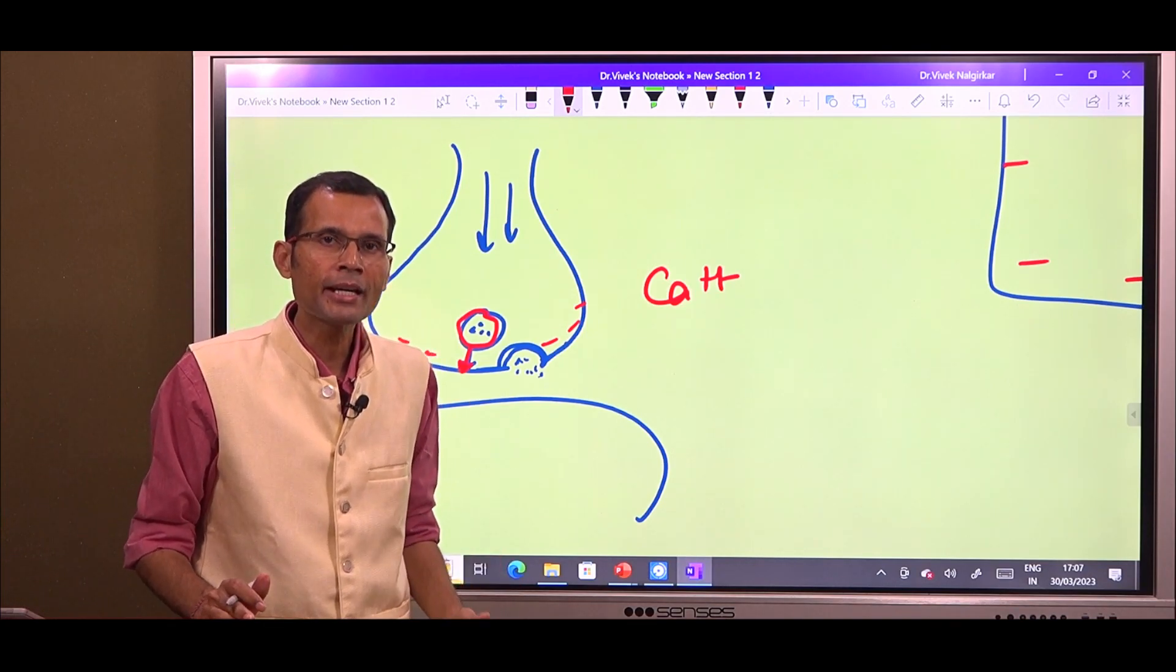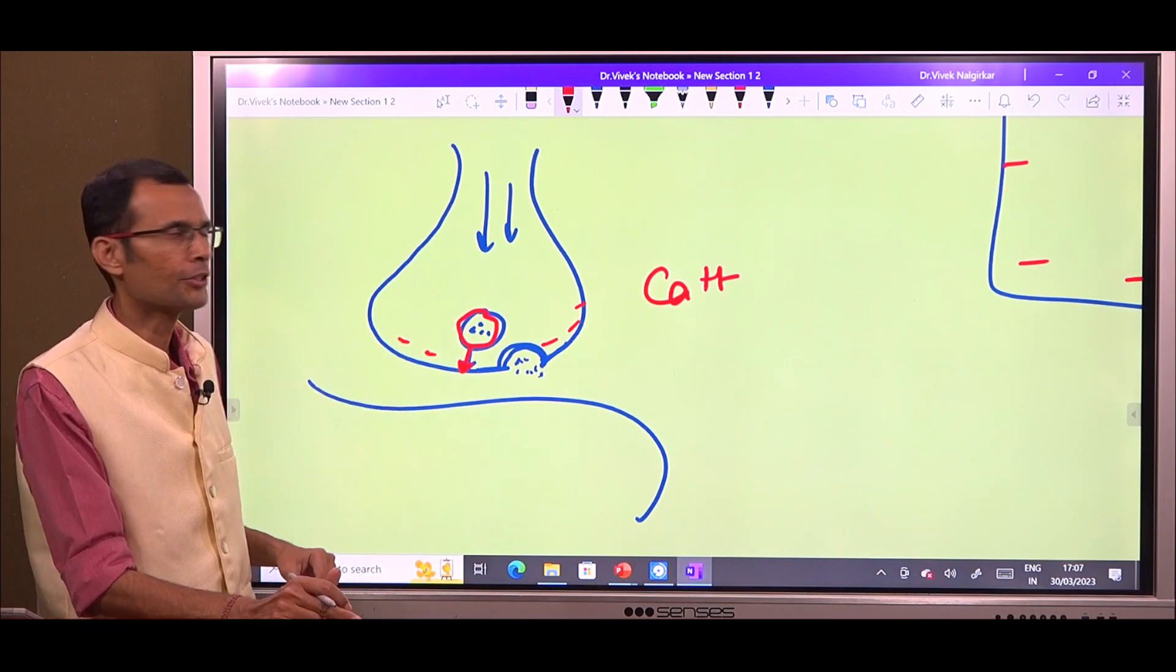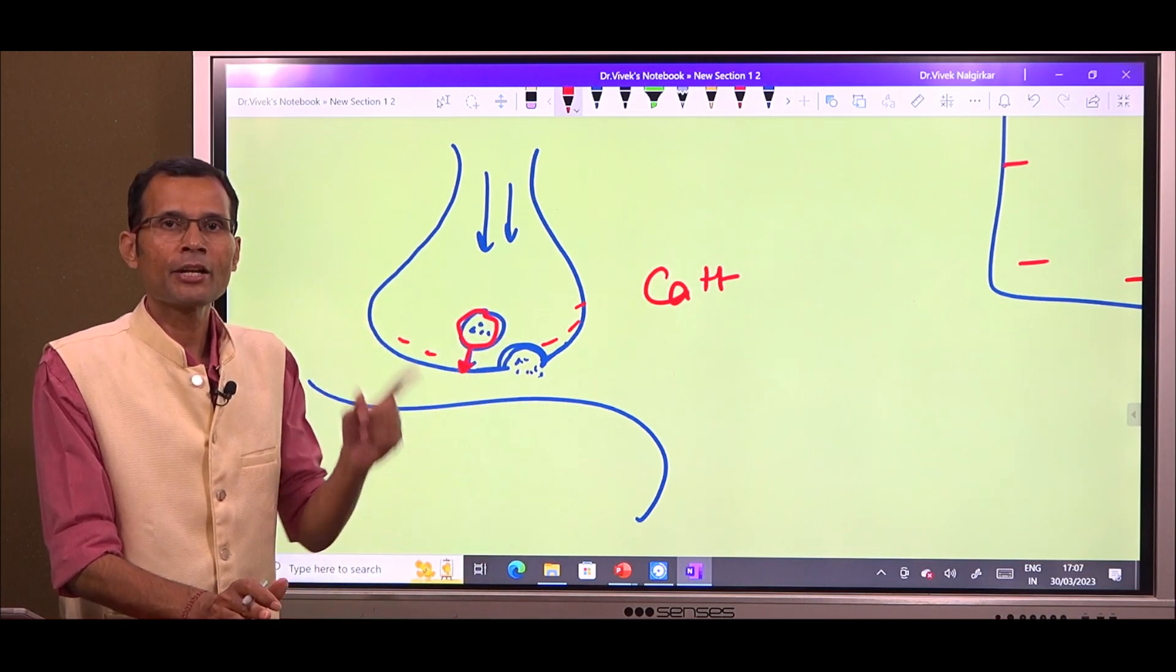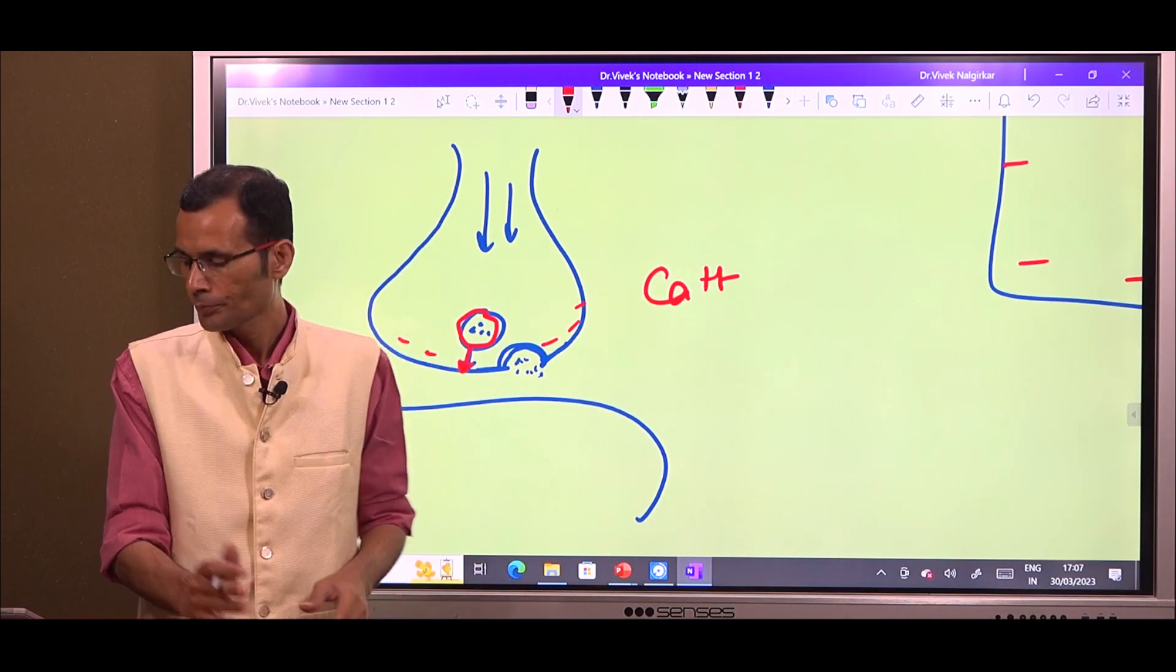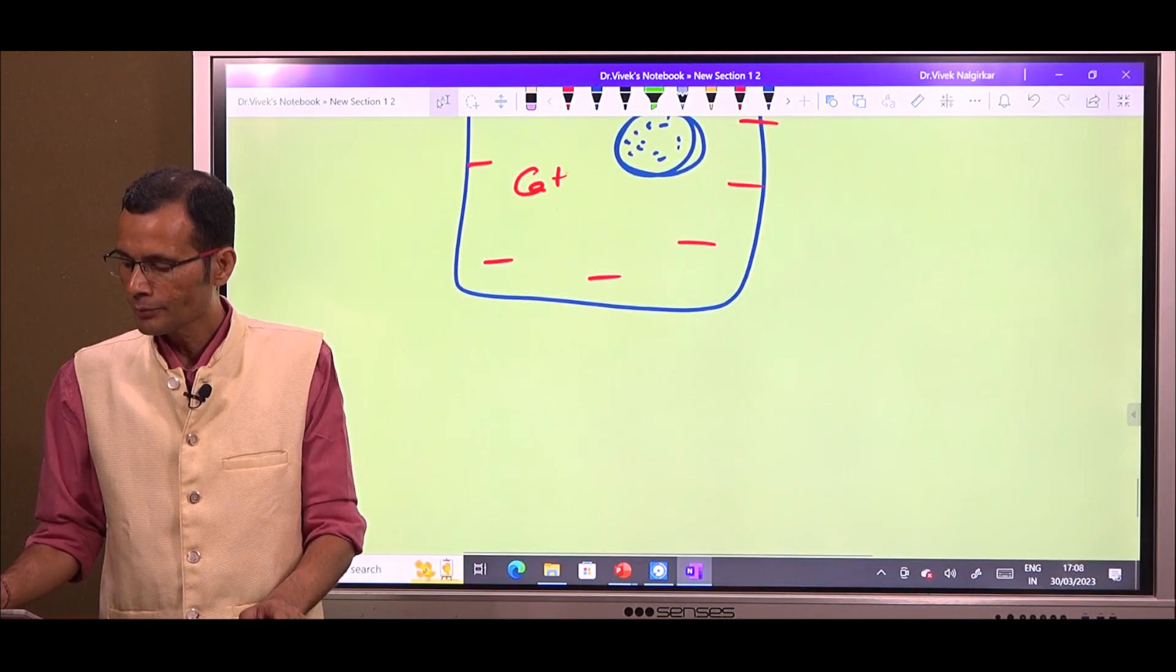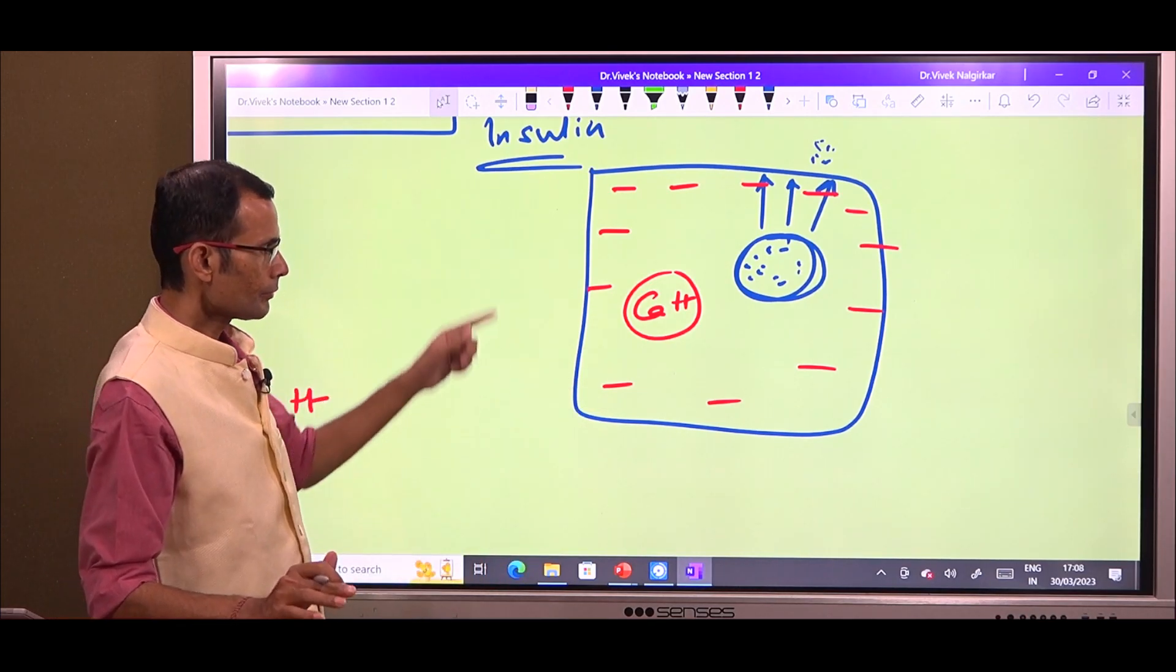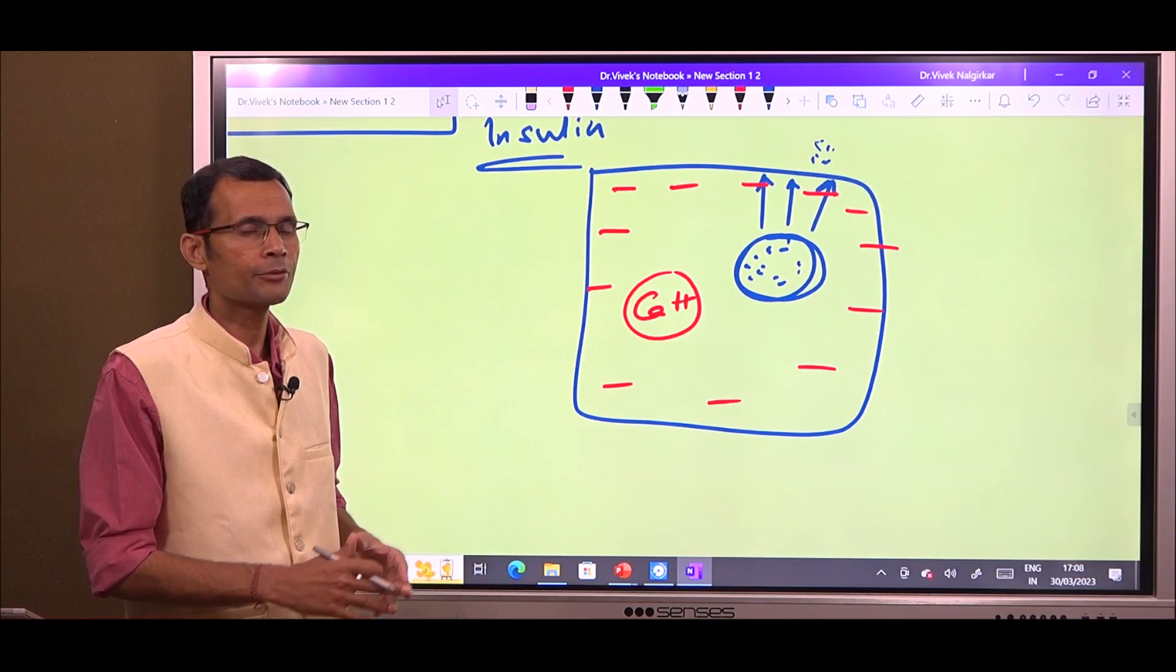Now, the only question that remains is how this calcium can be made available for this bridge formation. Another important principle that you must remember forever is that calcium cannot be kept in the cytosol in high concentrations. No cell can tolerate high calcium levels inside the cytosol, in the cytoplasm. This calcium, if it is high inside the cell, it will damage the contents. It will damage the cell organelles. It is very damaging.